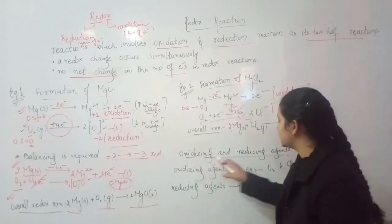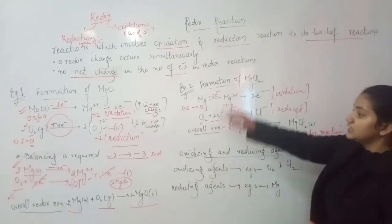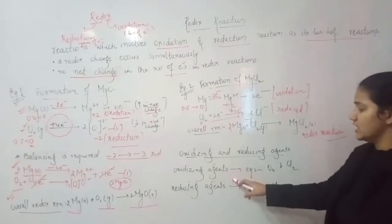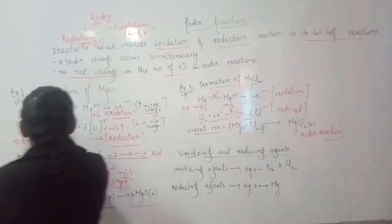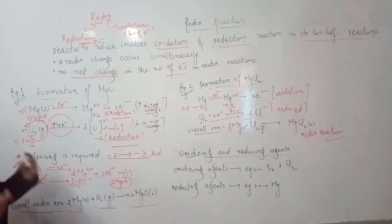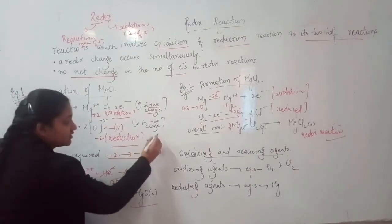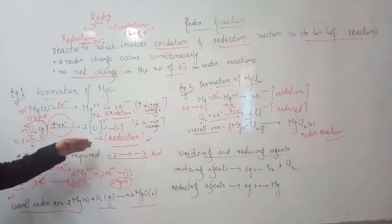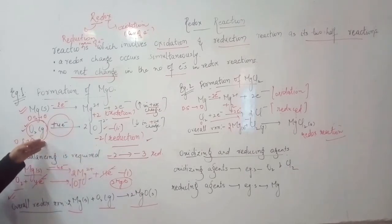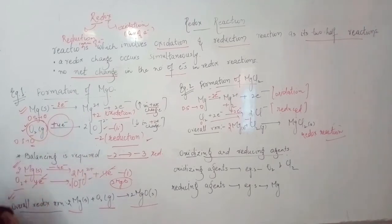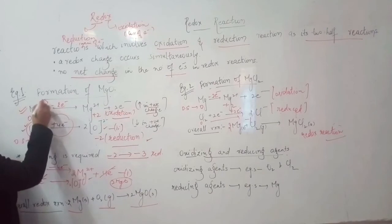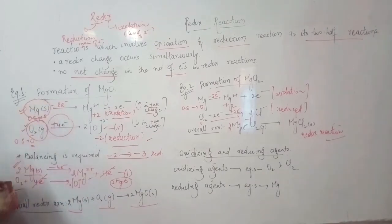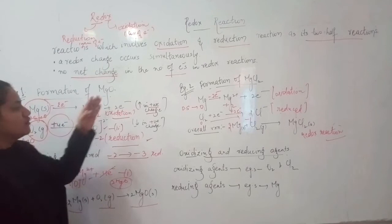What are oxidizing and reducing agents? In these two examples, oxidizing agents are substances which enable a process of reduction — they themselves get reduced, and so they are called oxidizing agents. In our examples, the oxidizing agents are oxygen and chlorine. Whereas reducing agents are those which themselves get oxidized in order to carry out the process of oxidation.